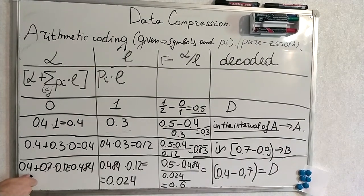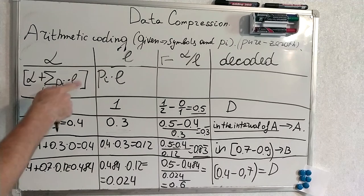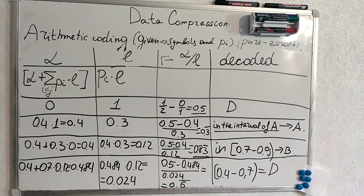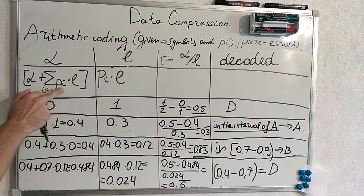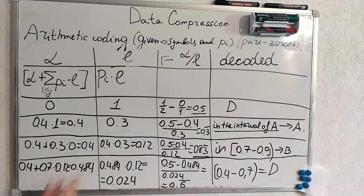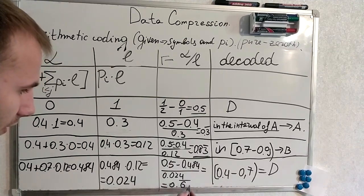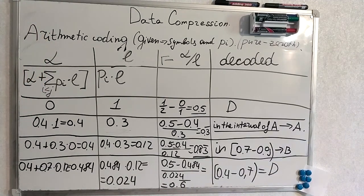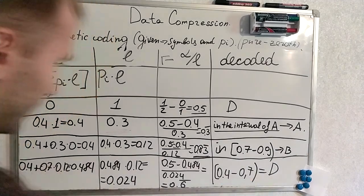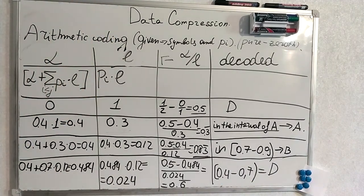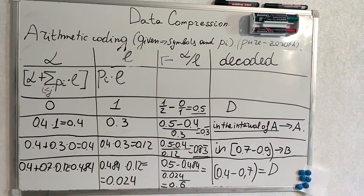And this is the final step. We take the previous alpha. Take the result of calculating this. Then we recalculate L. Plug everything in and determine the place on the interval we're currently at. So we're at D. But there is an important detail. We have to know number of symbols beforehand. Otherwise decoding might never stop. And that's it.